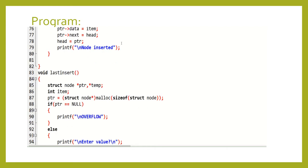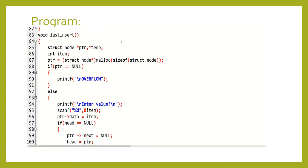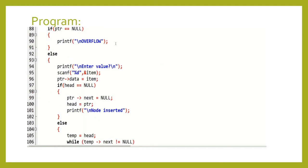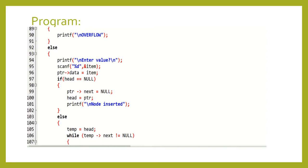For last insertion, a temp variable and a new node are created. If ptr equals null, it prints 'overflow'. Otherwise the user enters a value. 'ptr->next = null' and 'head = ptr' — if the inserting node contains a null value in the address field, then as it is inserting at the last position, the last element should contain null in its address field, and insertion is successful.